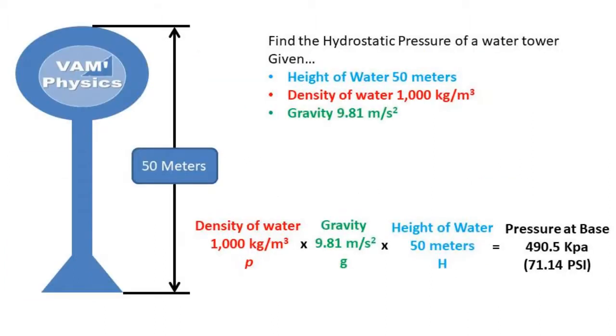Going back to our problem, if we take the density of water, multiply times gravity, and then multiply times the height of the water, we get a pressure of 490.5 kilopascals or 71.14 psi at the base of the water tower.